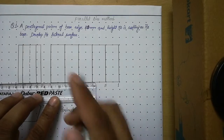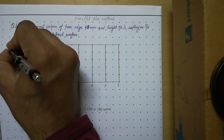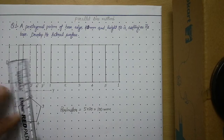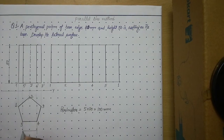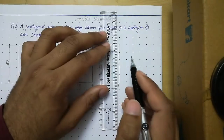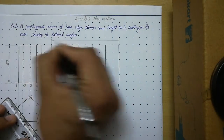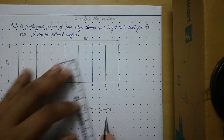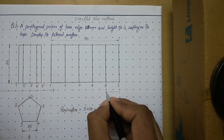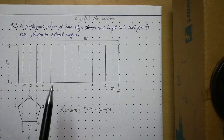Now place the dimensions. The height is 50 mm, the side length is 20 mm, and the perimeter is 100 mm. You can also show one part length of 20 mm. I hope the development of the pentagonal prism is clear to you. The same steps apply to any other type of prism.